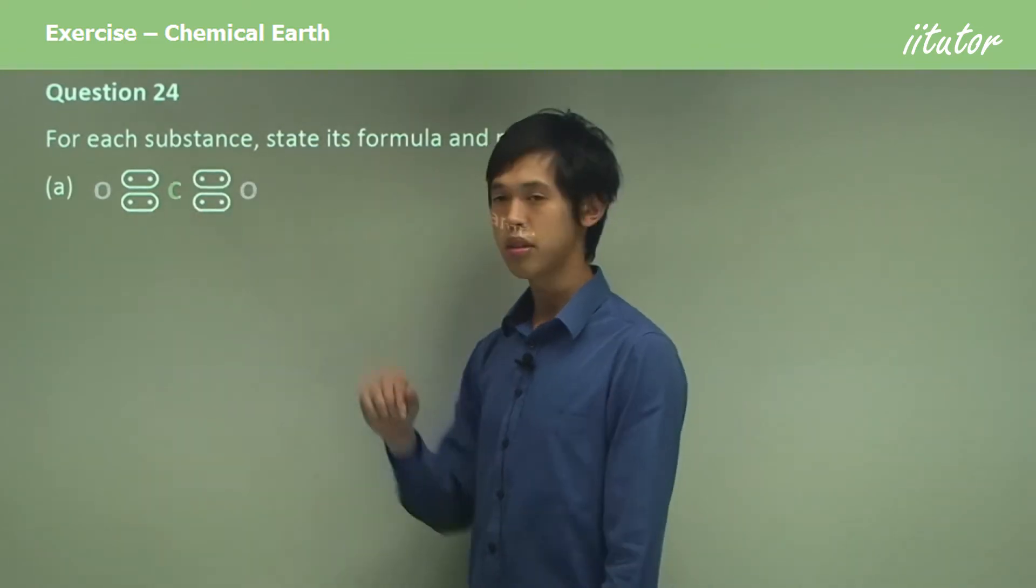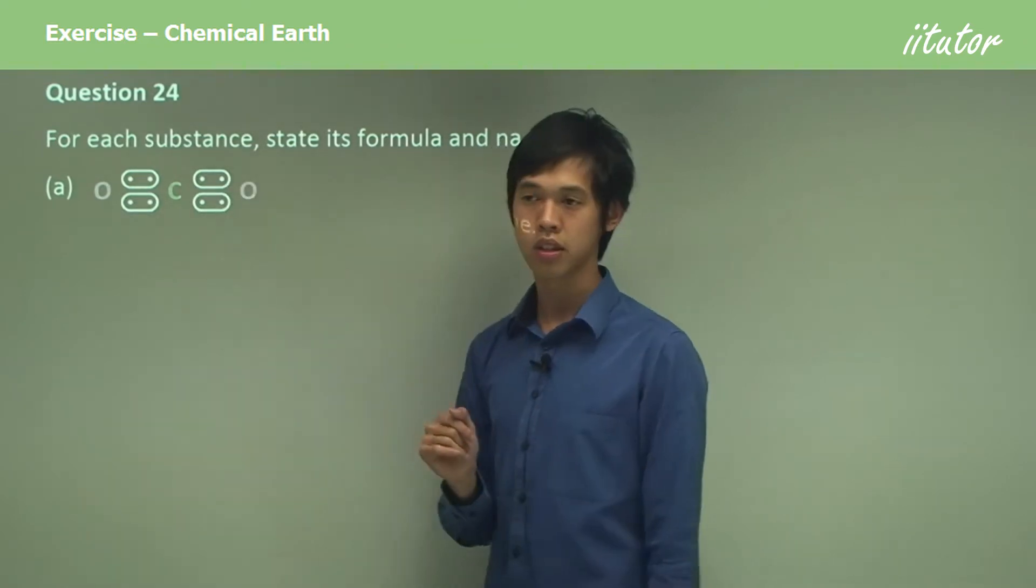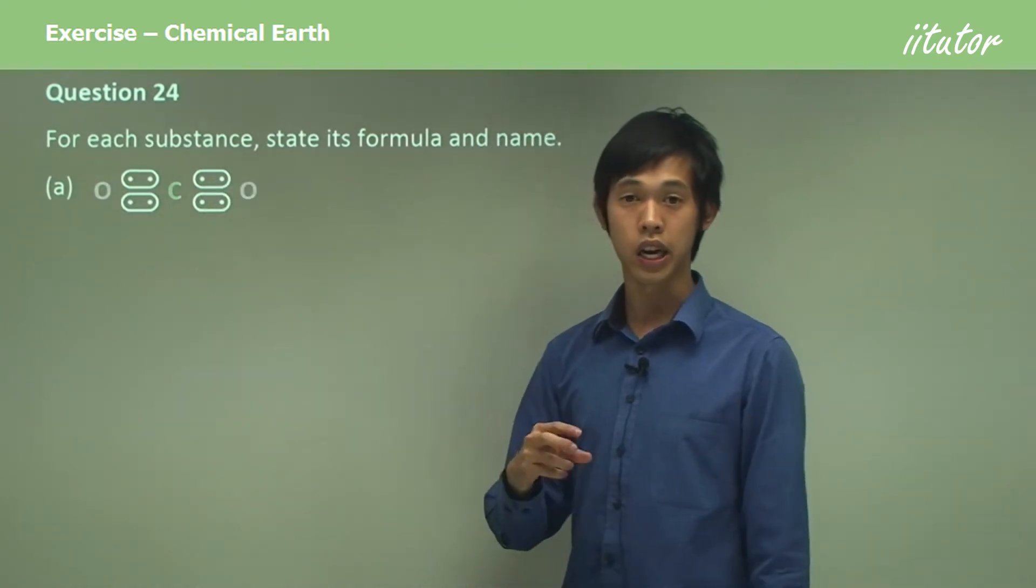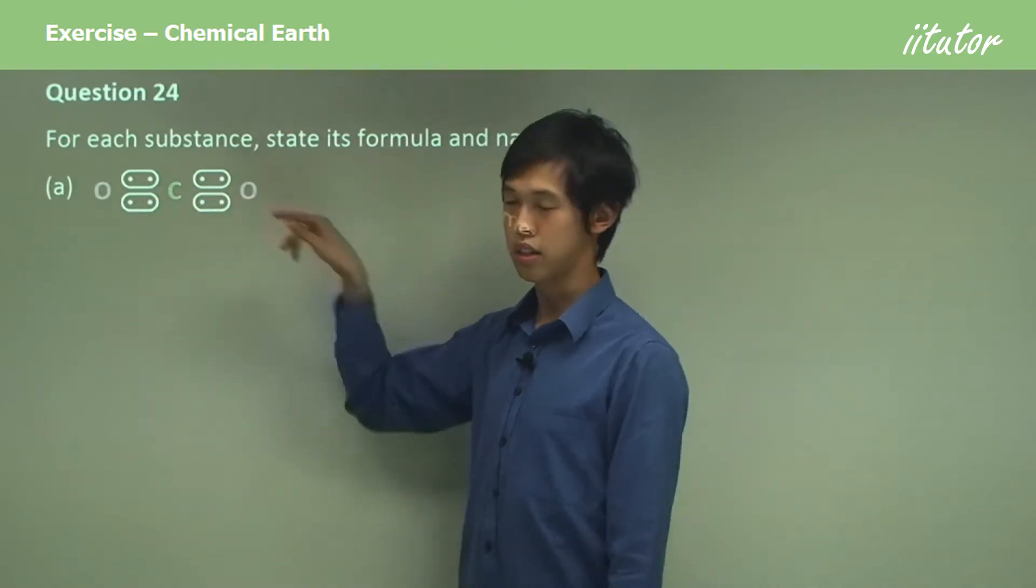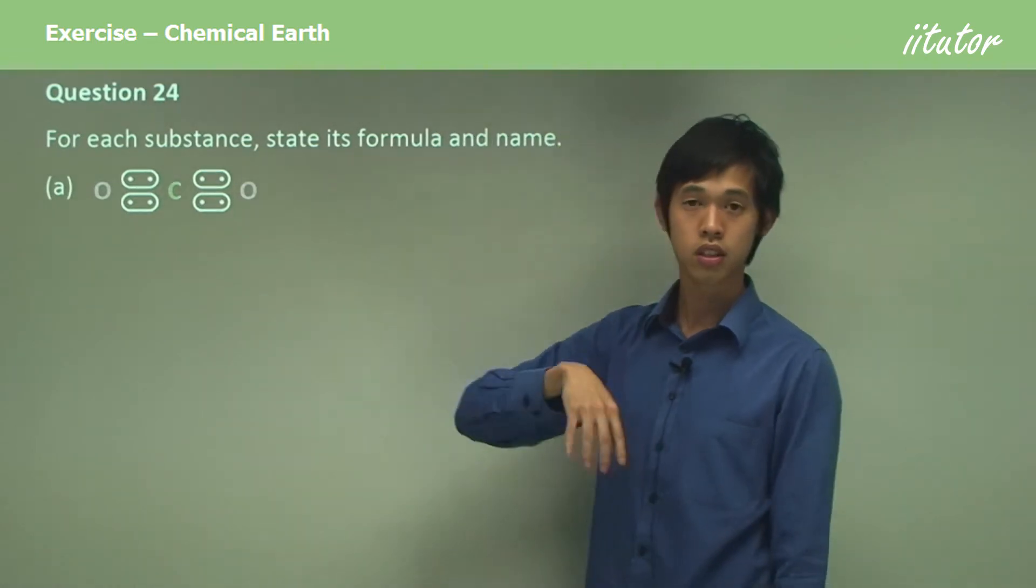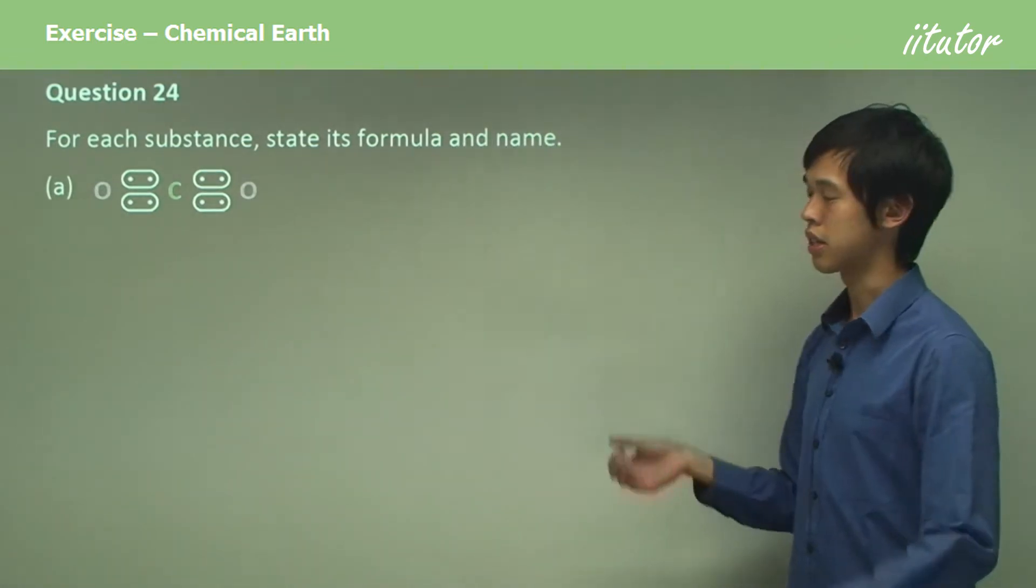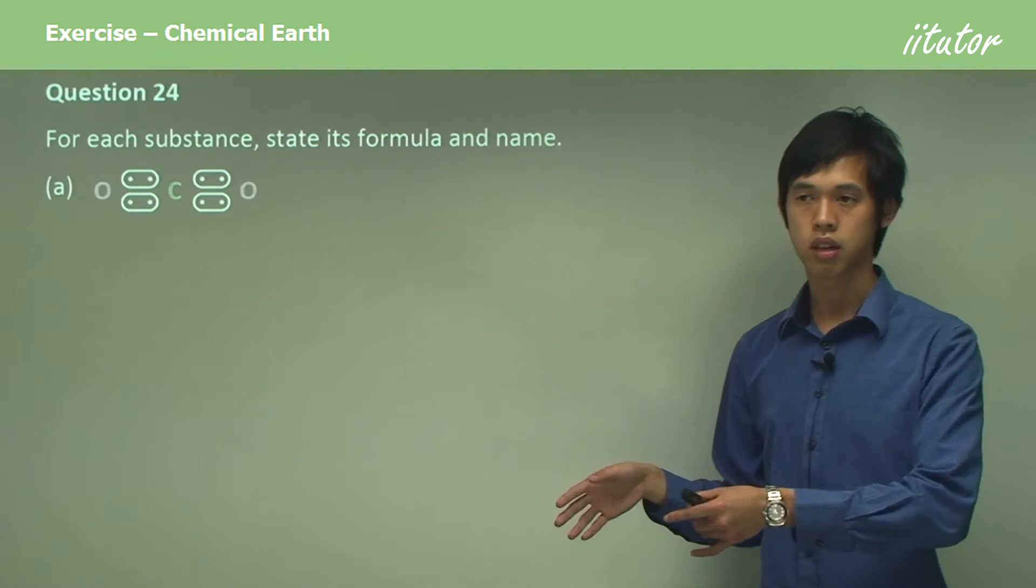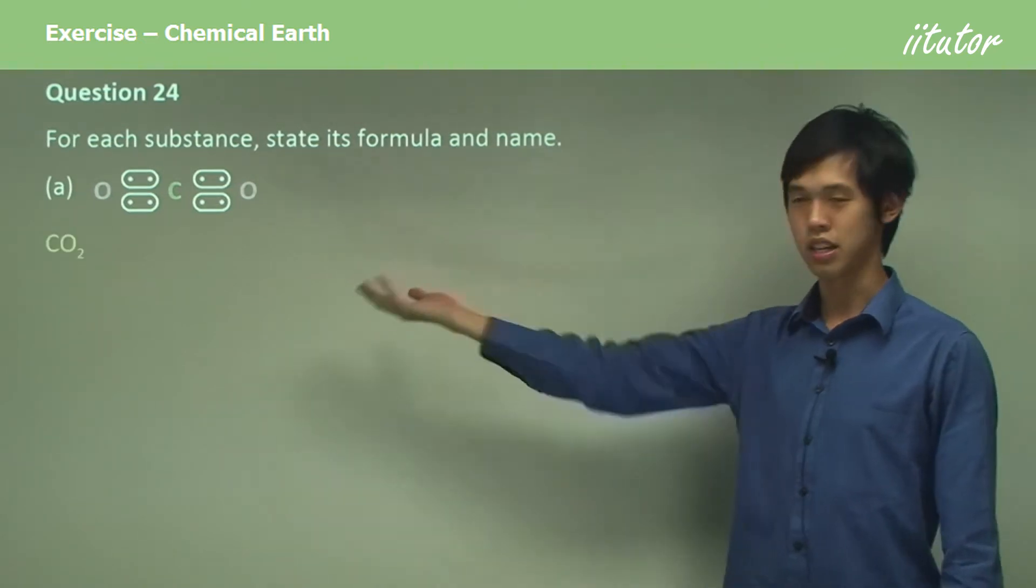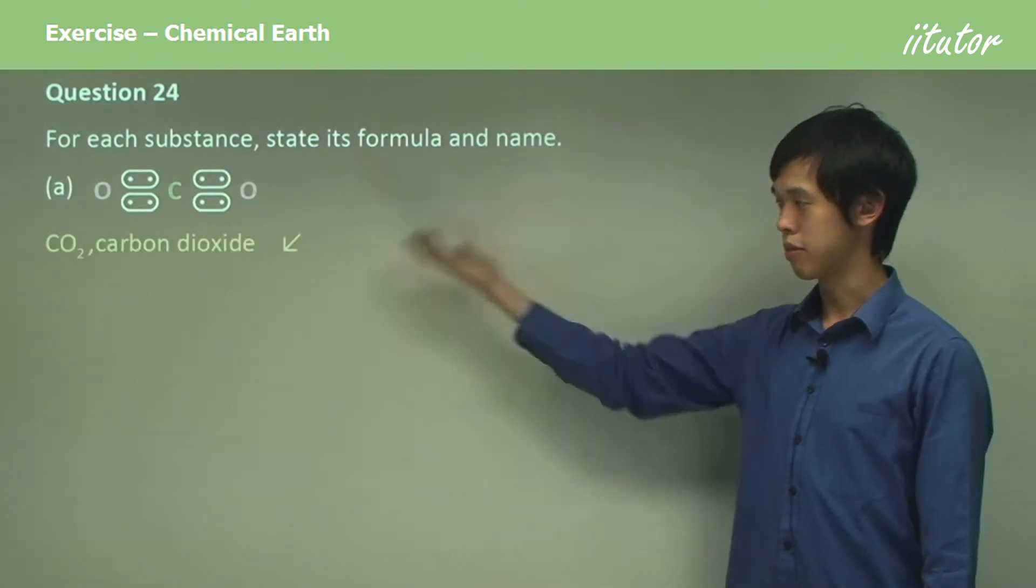There's carbon in the middle, there's two oxygens, so it's carbon-di-ox, because there's oxygen, and then we have to change the suffix to '-ide'. So it's carbon dioxide. That's CO2, and we call it carbon dioxide.